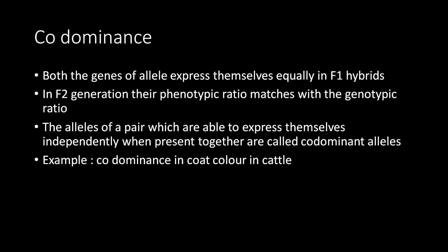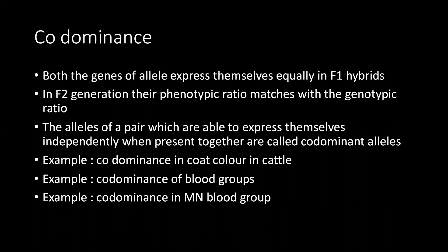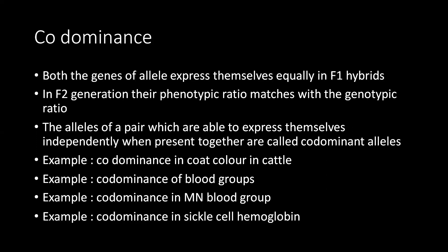An example of co-dominance is the coat color of cattle — red and white patches. Other examples include co-dominance in ABO blood groups — blood group A, B, and AB — the MN blood group in humans which has M, N, and MN types, and co-dominance in sickle cell anemia.